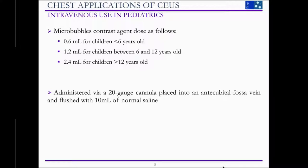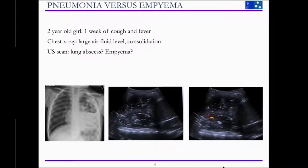As with any intravenous application, it's administered via a 20-gauge cannula in the antecubital fossa and flushed with 10 mls of normal saline. I'm going to show you a couple of cases where we used contrast-enhanced ultrasound — both intravenous and intracavitary — to solve problems regarding what was going on in the chest, and sometimes to aid clinicians in terms of further management for this particular group of children.